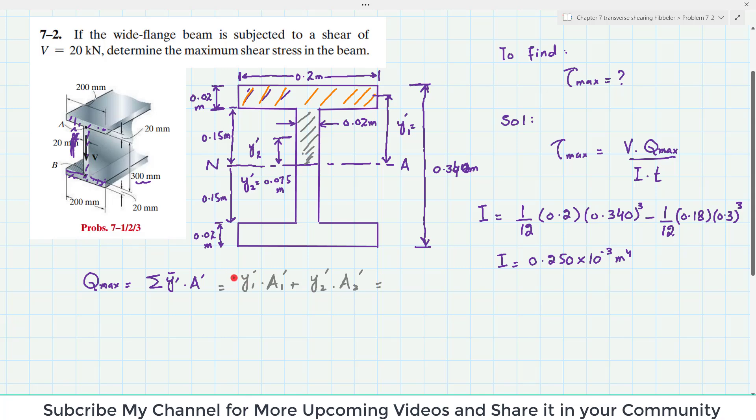Now what is Y1 dash? So Y1 dash is the distance from neutral axis to the centroid of A1 dash. This is A1 dash. So A1 dash is 0.2 meter width and height is 0.02. So Y1 dash will be in mid of this height, which is this.